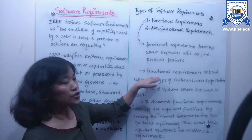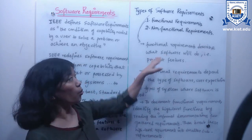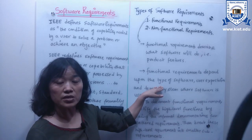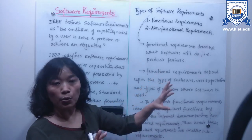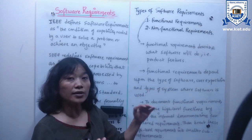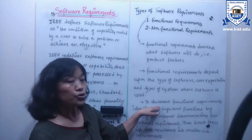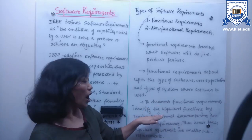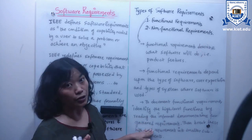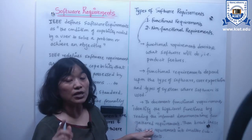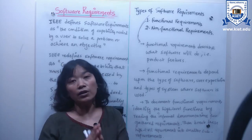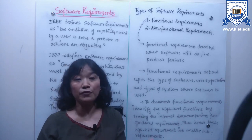Functional requirements basically describe what the software will do — that is, they describe the software product features. Identifying functional requirements totally depends on the type of software, user expectations, and the type of system where the software is used. To document functional requirements, it is important to identify the high-level function requirements by reading the informal documentation gathered from requirements. These high-level requirements then get split into smaller sub-requirements, meaning any high-level requirement must consist of several other functions as well.